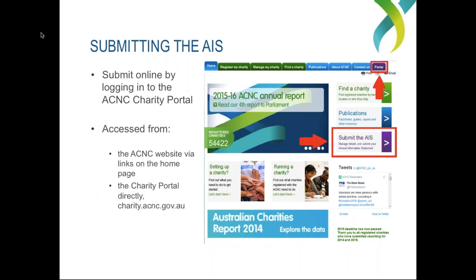There are two ways you can get there. From the ACNC website homepage, you can see the top right-hand corner purple tab that says Portal, and also a link which says Submit the AIS. Otherwise you can go directly by entering the URL charity.acnc.gov.au. Whichever way you access it, you will end up at the same login point.